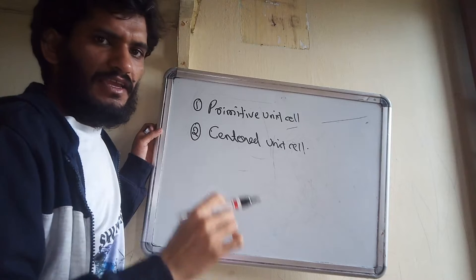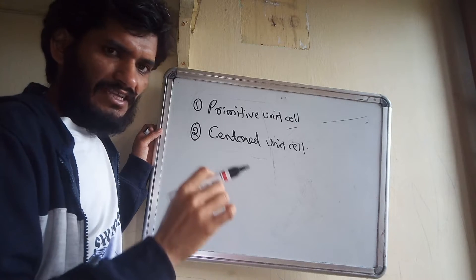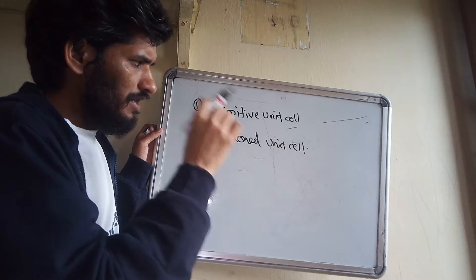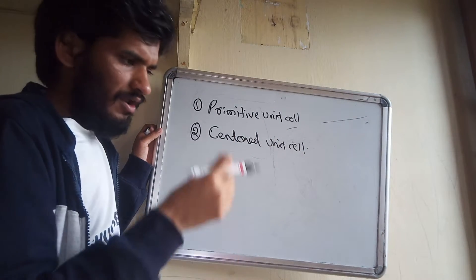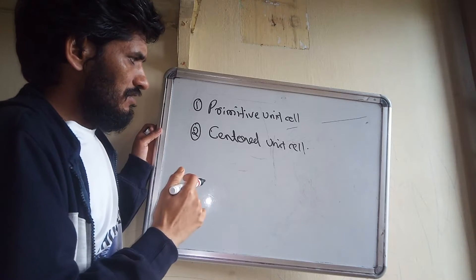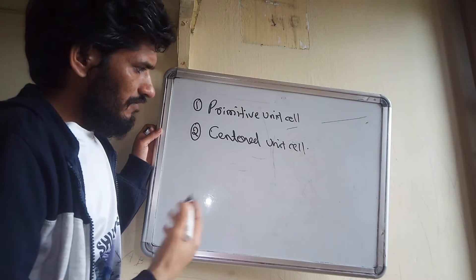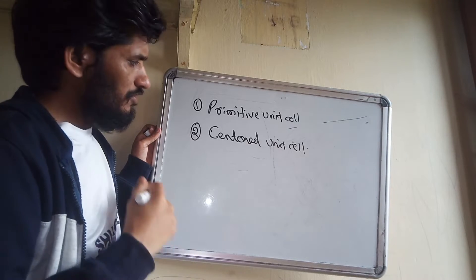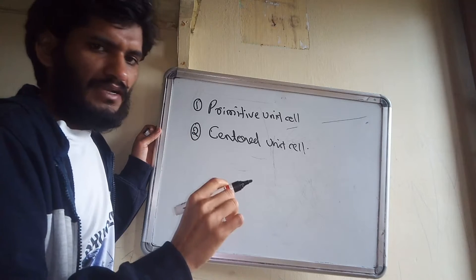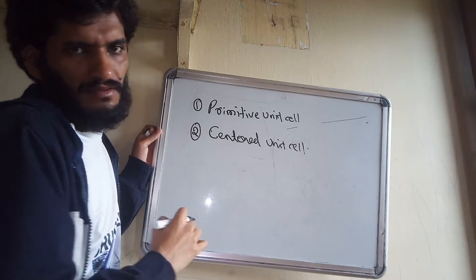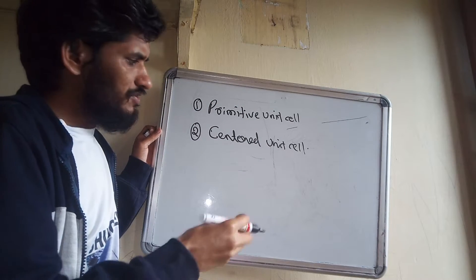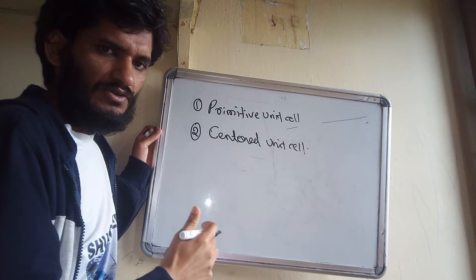Primitive unit cells means that in any unit cell, the lattice points — the particles of a solid — are located only on the corners of the unit cell, not on the faces and not in the middle. Centered unit cells, on the other hand, have lattice points on the corners as well as on the faces or in the middle of the unit cell.